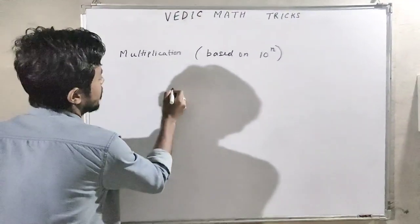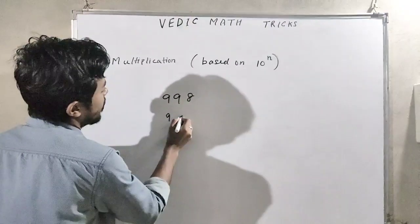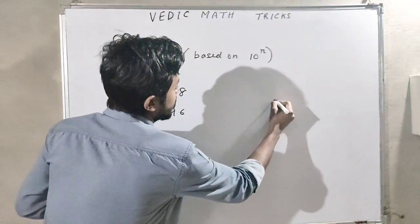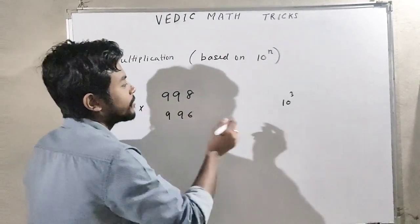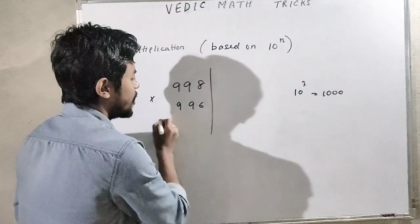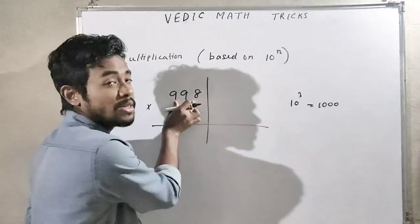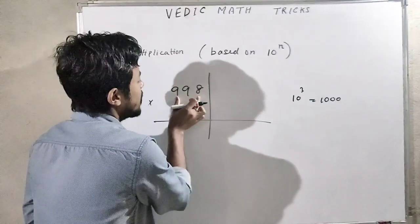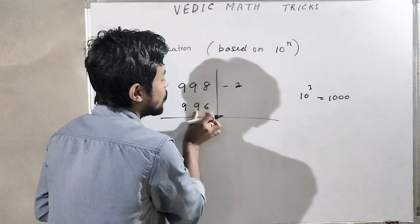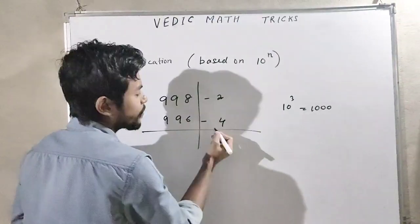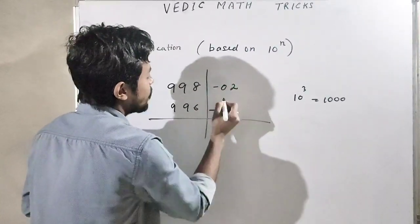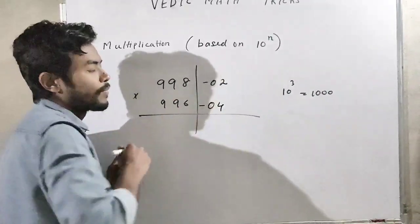Let us take another example: 998 by 996. That is, we have to multiply 998 by 996. Here we consider base as 10 cubed. This is a 3-digit number. The base is 1000. That is, we have to consider 998 by how much less or how much more by 1000. Now 998 is minus 2. And 996 is minus 4. But here remember one thing: you have to get a 0.